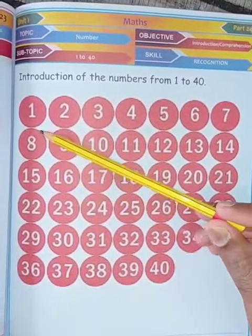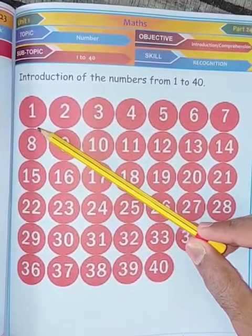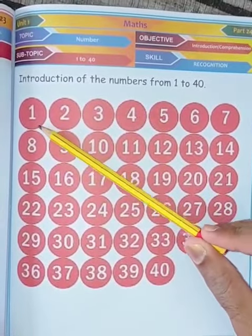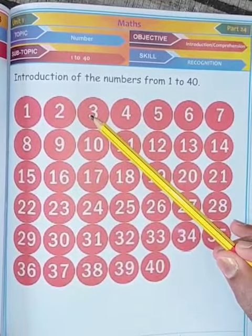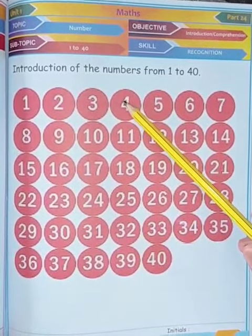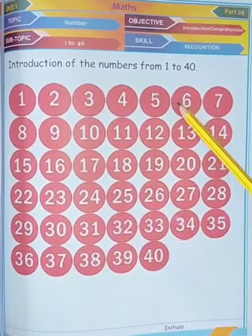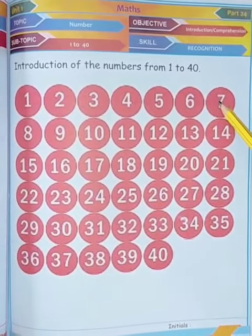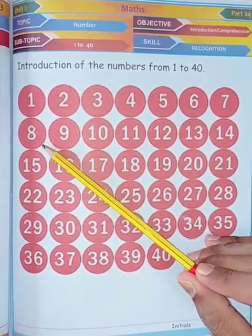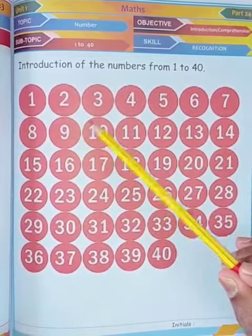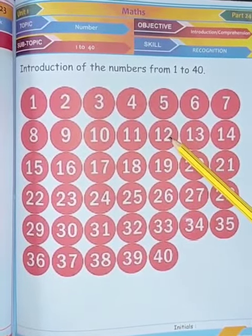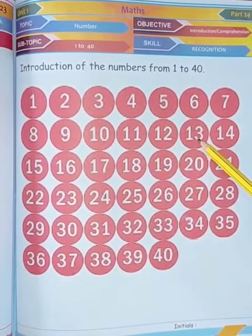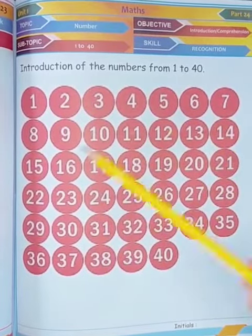Say the numbers after me: one, two, three, four, five, six, seven, eight, nine, ten, eleven, twelve, thirteen, fourteen, fifteen.